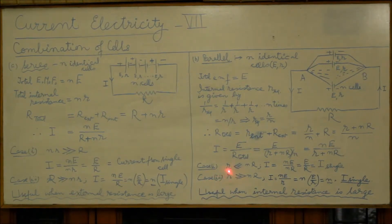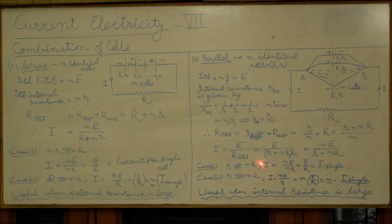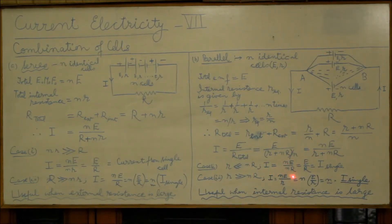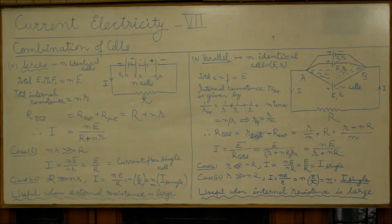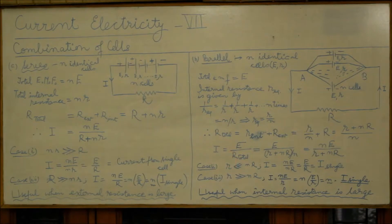Like in series, we probe this relation to see when the combination provides larger current. Case 1: when the cells have small internal resistance, r very small compared to nR, we neglect internal resistance and get i = ne/nR = e/R, which is the current from a single cell. Clearly the parallel combination is not useful when cells have small internal resistance.